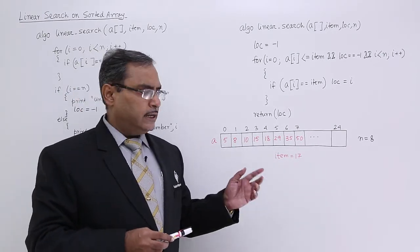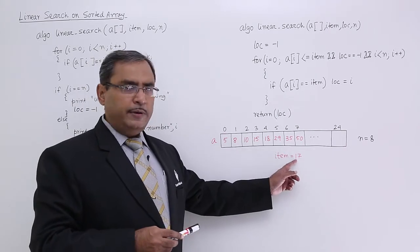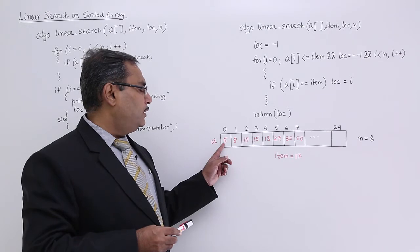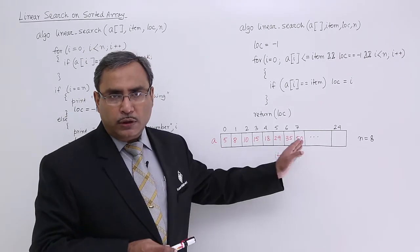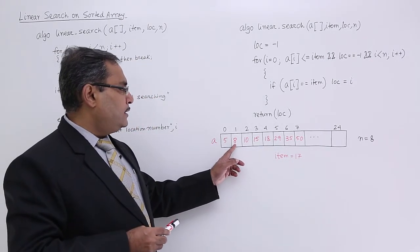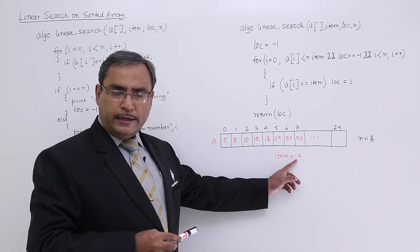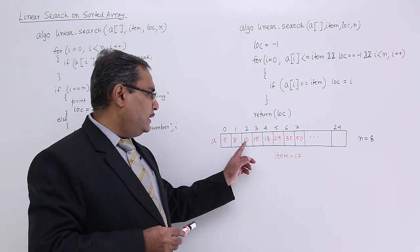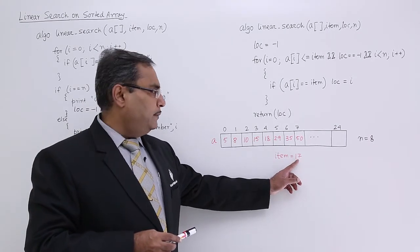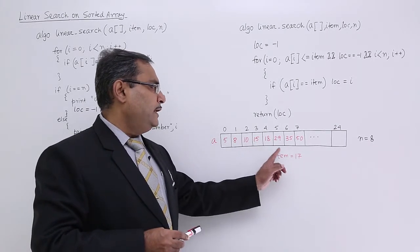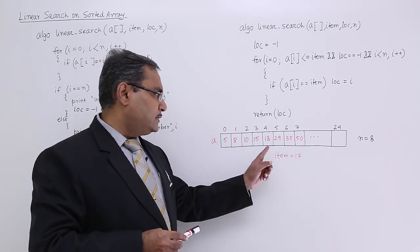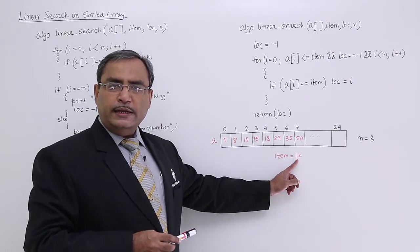At first, according to the linear search, I shall check 5 is equal to 17 or not. And if this particular 5 is lesser than item, then I shall go for the next location for comparison. 8 is lesser than item and 8 is also not equal to item, then I shall go for the next. 10 is lesser than item and also 10 is not equal to item, I shall go for the next. 15 is lesser than 17 and 15 is not equal to 17, then I shall go for the next. 18 is lesser than 17 is false.